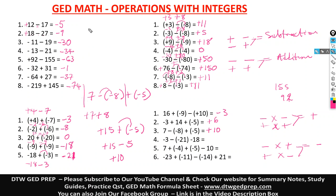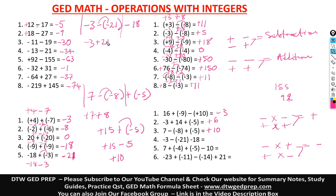We have negative 3, negative in parentheses negative 21, then negative 18. Take these two first: negative 3, and negative times negative gives positive 21. Negative and positive — subtract — giving 18, taking a positive sign. Drop the last: negative 18. Positive and negative — subtract — so 18 minus 18 is 0. The answer is 0.